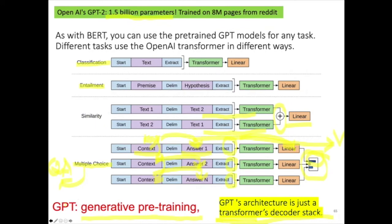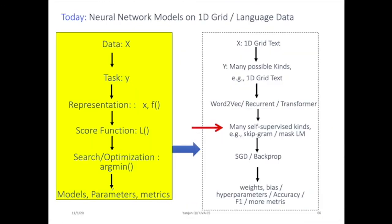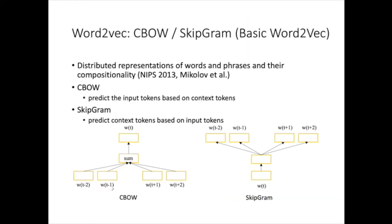That multiple-choice formulation is the QA setup. Now, we know the transformer architecture and its variants. Let's jump to something really interesting: how people train those transformer and variant models. Before discussing self-supervised training of transformer models, I want to talk about how people trained word2vec models, because this is the foundation many people used later to train transformer models.